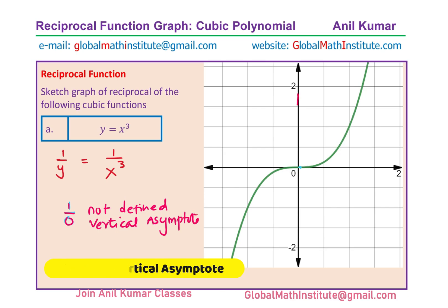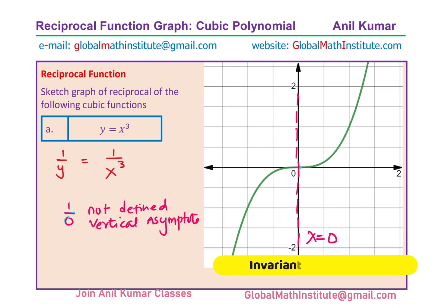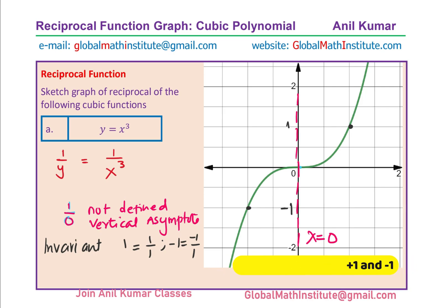At x equals 0, we have a vertical asymptote, which I am drawing with a dashed vertical line. The equation of this line is x equals 0. So we begin with the zeros of the graph and convert them to vertical asymptotes. The second point of interest is the invariant points — points which do not change in both graphs. For example, 1 equals 1 over 1, and minus 1 equals minus 1 over 1. So the reciprocal of 1 and negative 1 is also the same. These invariant points are common to the function and its reciprocal.